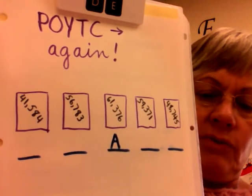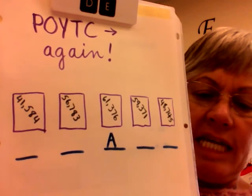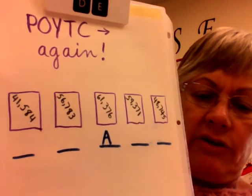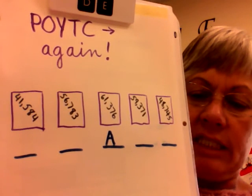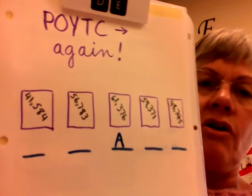Clue number four. The number on card D is greater than the number on card C, but less than the number on card E.